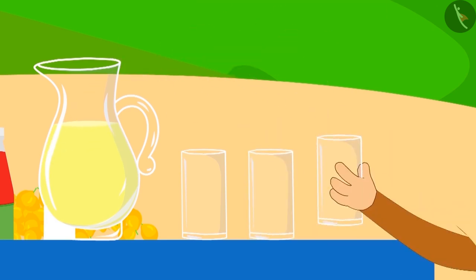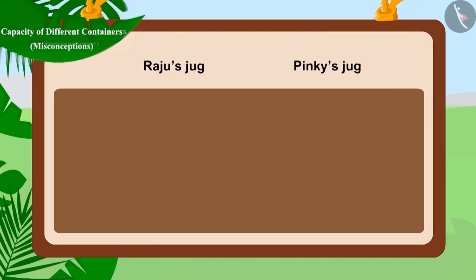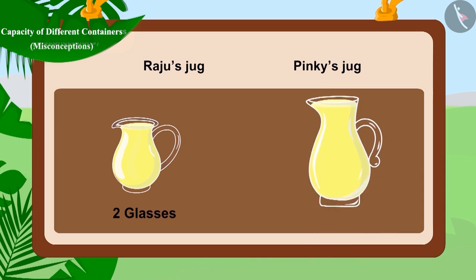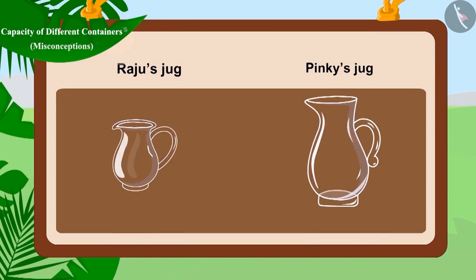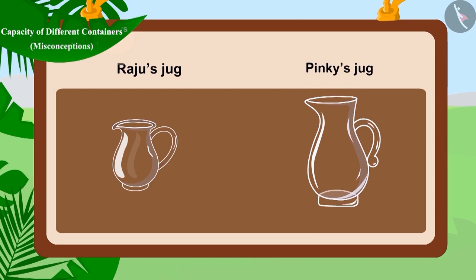That's right — Pinky's jug used four glasses of lemonade! So Raju's jug was filled with two glasses and Pinky's jug was filled with four glasses. But both Raju and Pinky have the same type of container — a jug. So how did this happen?